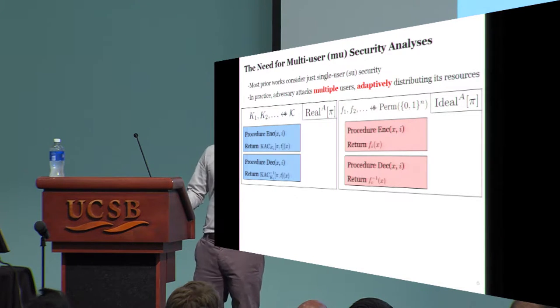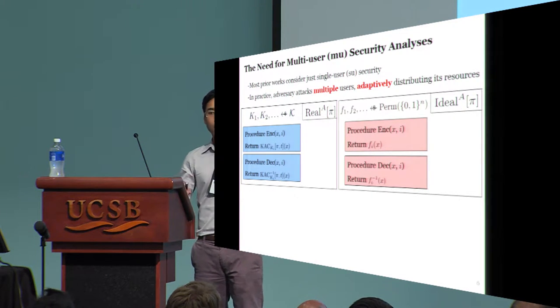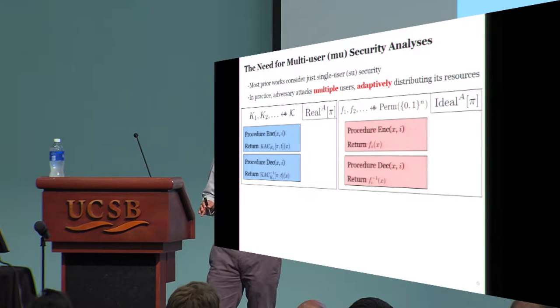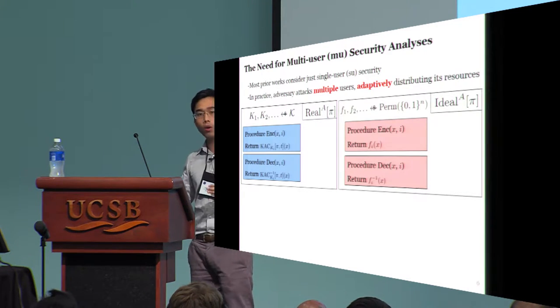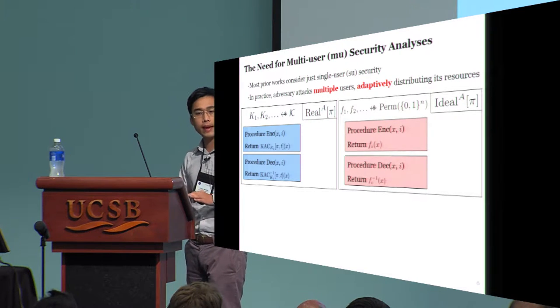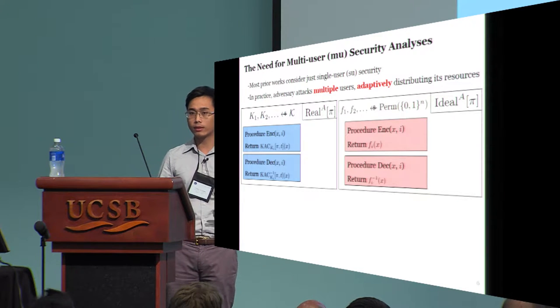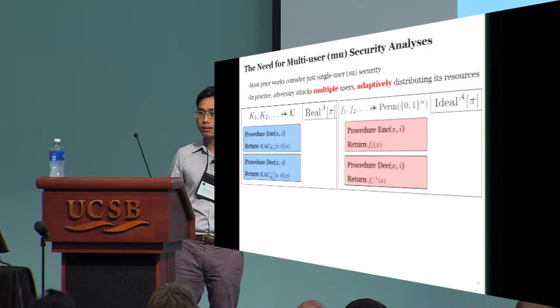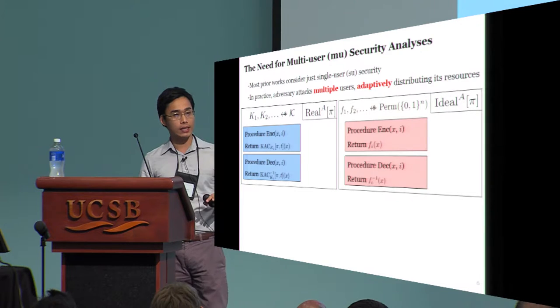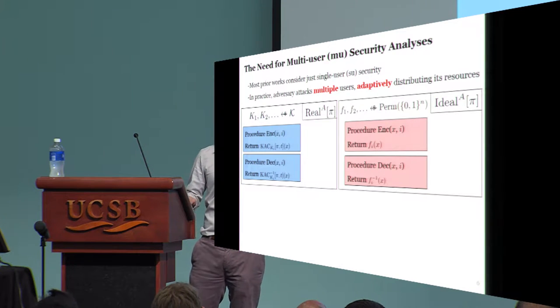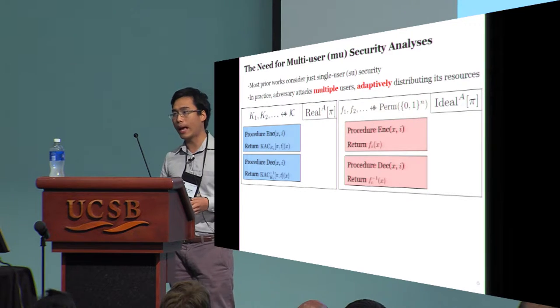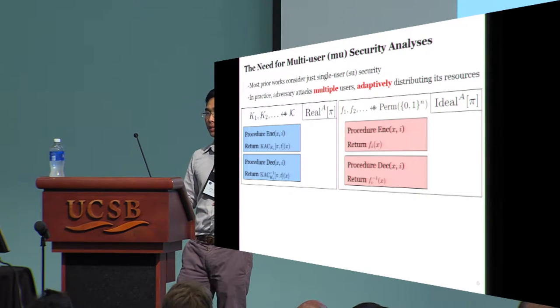Prior works are weak not only quantitatively, but also qualitatively, as they are concerned with only security with respect to a single user. But in practice, an adversary will typically attack on mass, adaptively distributing its resources against multiple users. That adversary will be happy as long as it can compromise somebody.